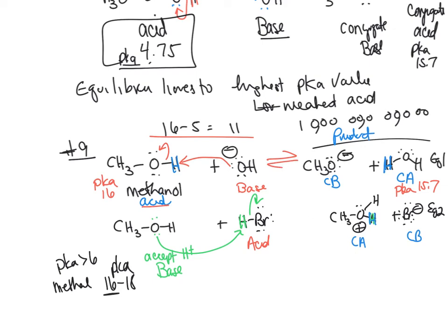For equation 1, the pKa of methanol is ~16 and water is 15.7 — nearly equal, so equilibrium is about equal. For equation 2, pKa of HBr is −9 and hydronium is ~1.7 — a difference of ~11 units (10¹¹), so equilibrium strongly favors the products. Based on these comparisons, methanol's predicted pKa is approximately 16.